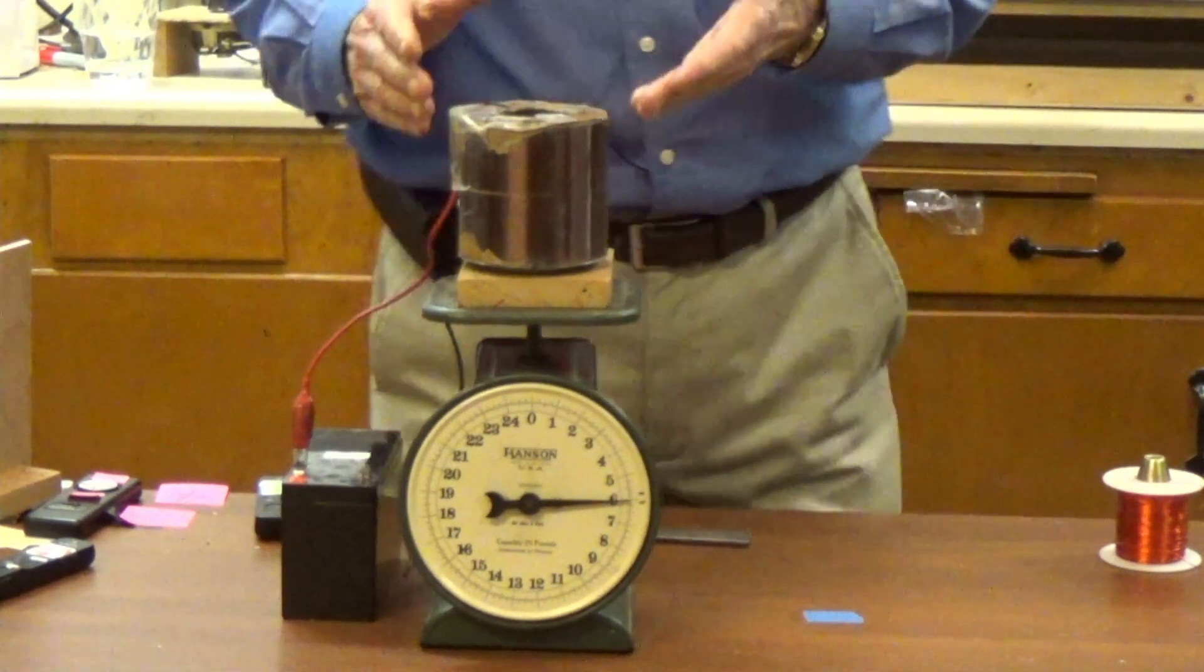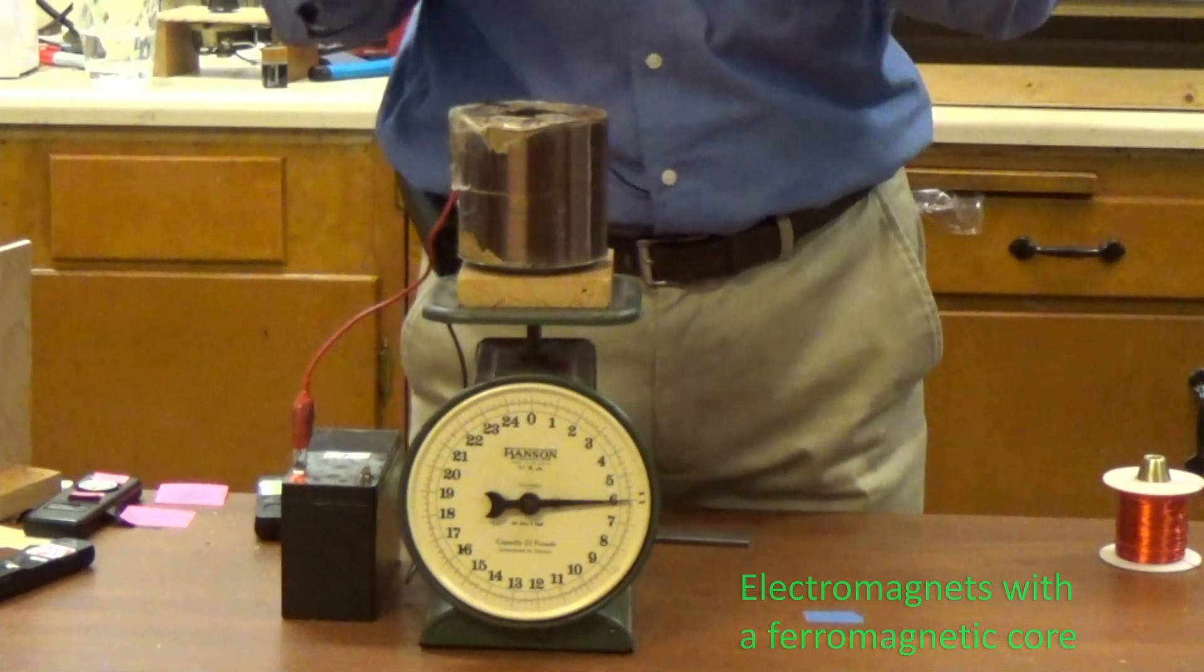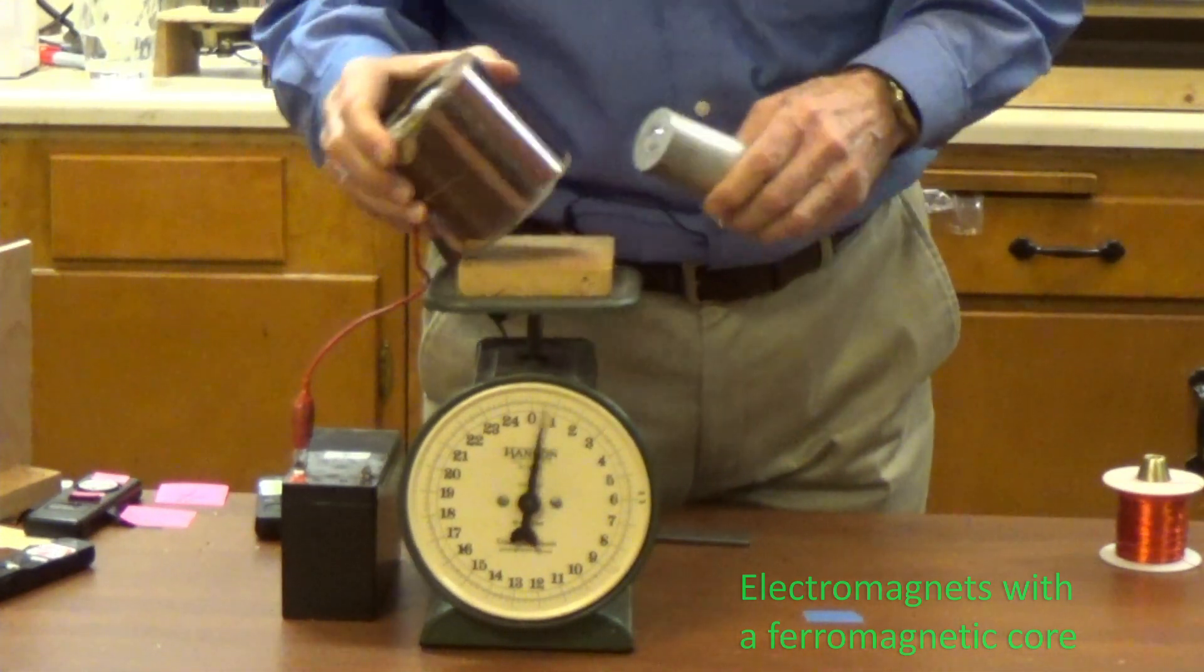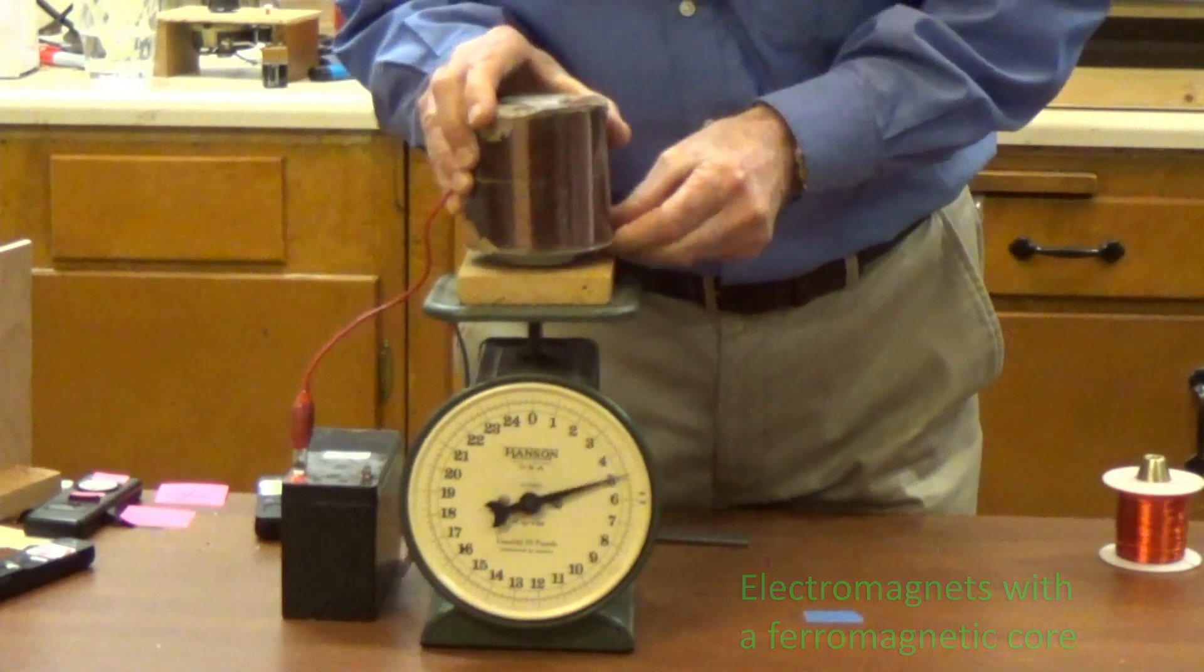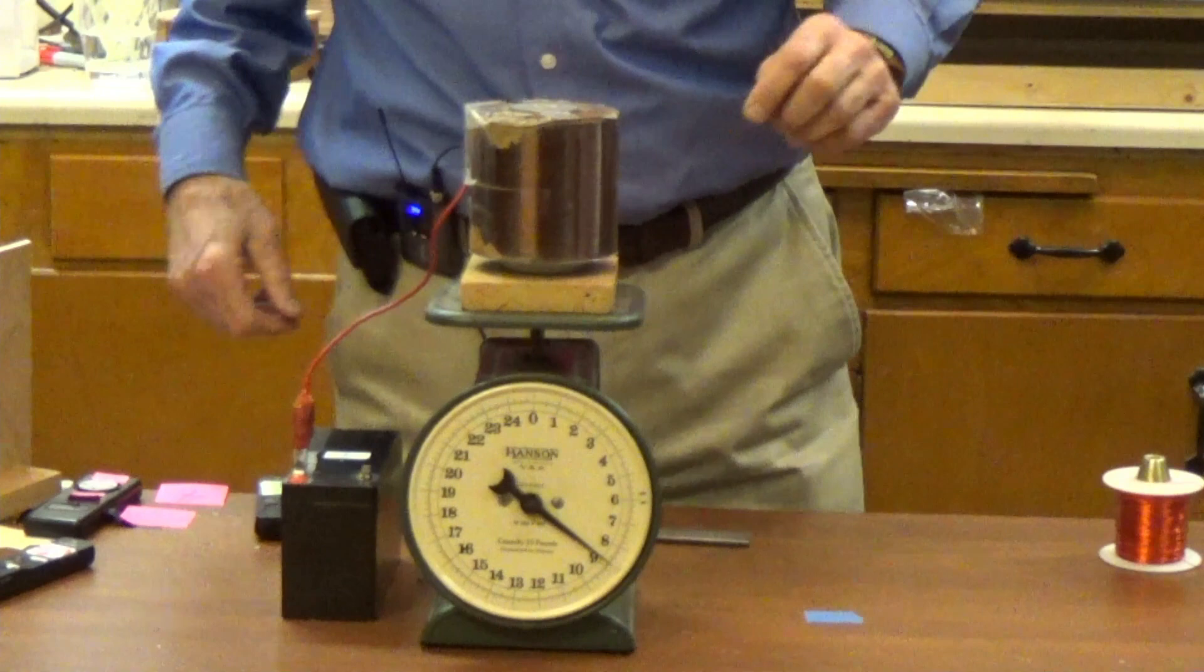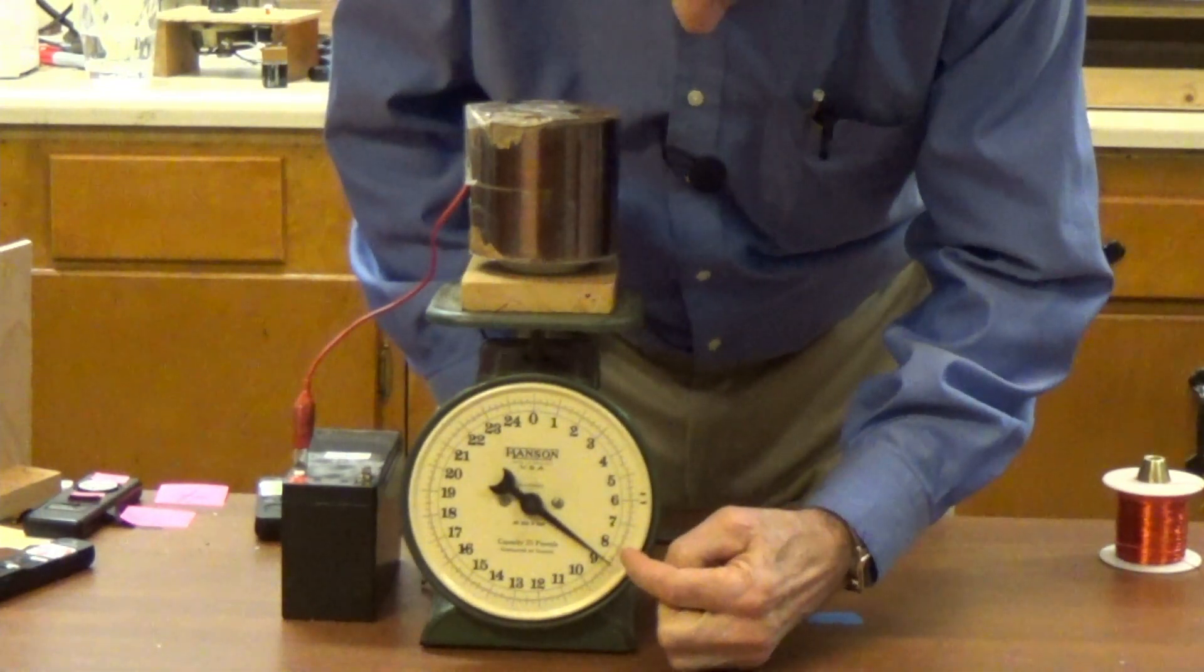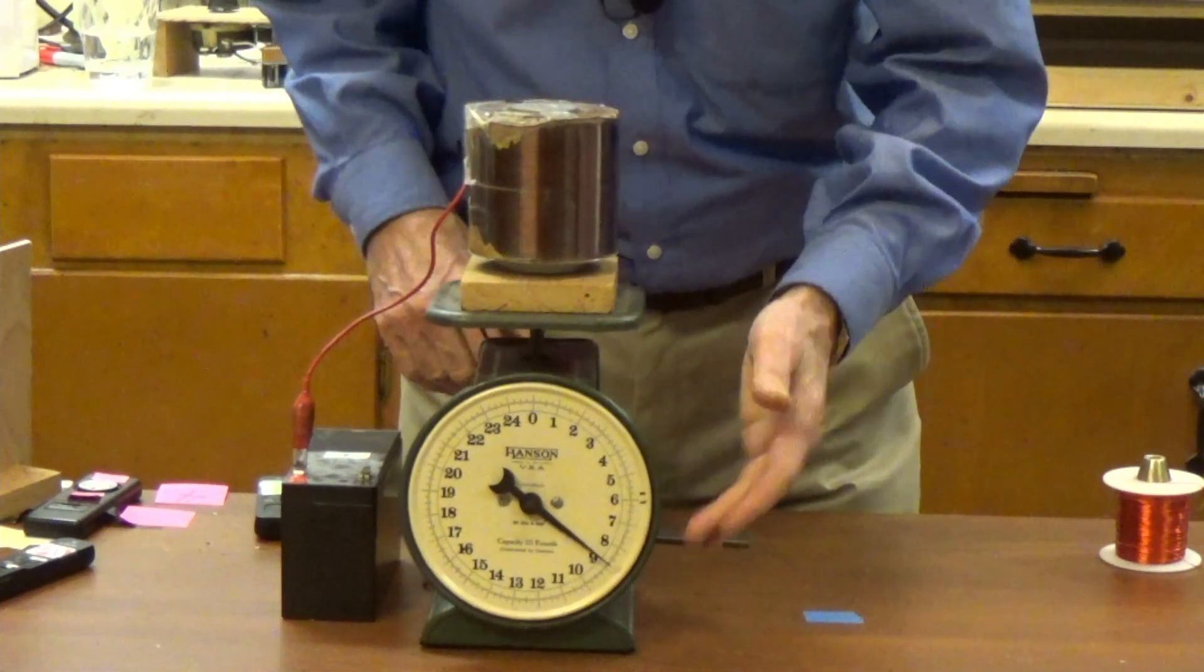Now we're going to fill this with a steel core. It's a ferromagnetic alloy and now you'll notice that the coil and the core weigh nine pounds.